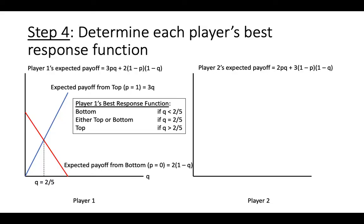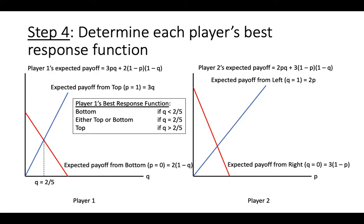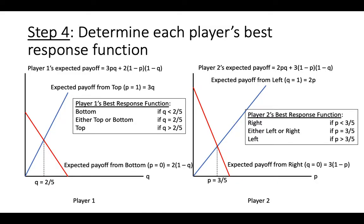We can work through the same process for player 2. We find that these two lines cross at p equals 3 fifths. Thus, player 2's best response function is to play right if they believe that the likelihood that player 1 will play top is less than 3 fifths, play either left or right if p equals 3 fifths, and play left if p is greater than 3 fifths.